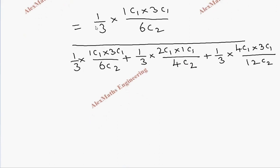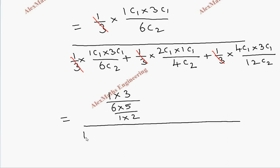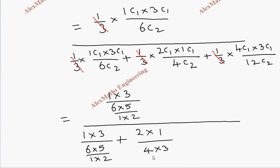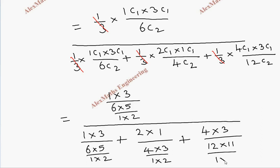Now cancel the common 1/3 from all terms. The total denominators are not the same so we cannot cancel those. Computing: 1C1 = 1, 3C1 = 3, 6C2 = 15. Then 2C1 = 2, 1C1 = 1, 4C2 = 6. Then 4C1 = 4, 3C1 = 3, and 12C2 = 66.